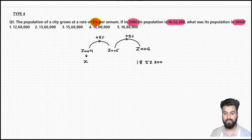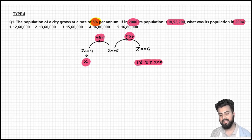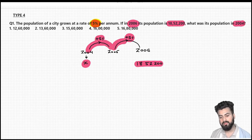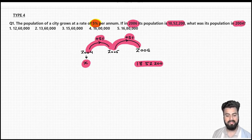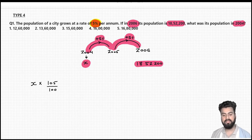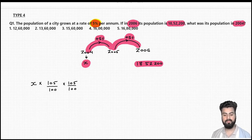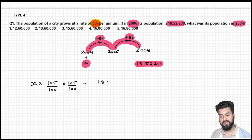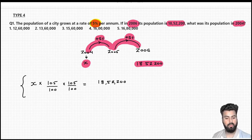I want to calculate the value of x, and I know that if I increase x by 5% twice it will be 18,52,200. Since changes are happening one after another, I can apply the concept of successive percentage change. Using multiplication factors, my base value is x, and since I have to increase the population by 5%, the multiplication factor is 105/100. Since the next year the population also increases by 5%, I write 105/100 again. After these two operations it becomes 18,52,200.